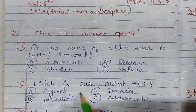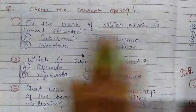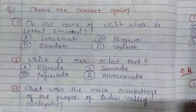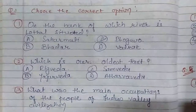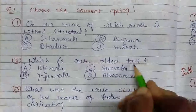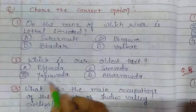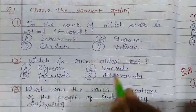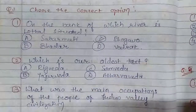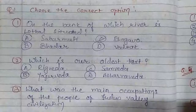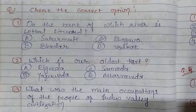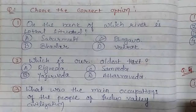Which is the next question? Which is our oldest text? The options are Rig Veda, Yajur Veda, Sam Veda, Atharva Veda. Subse oldest text humara konsa hai? That should be Rig Veda.